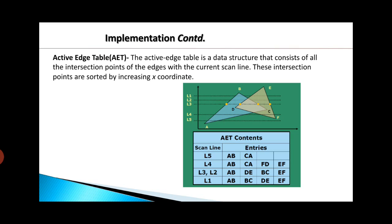Scan line N4 has four intersection points — two from polygon A, B, C and two from polygon D, E, F. N3 and N2 are intersecting at edges AB, DE, BC, and EF. And N1 is intersecting at AB, BC, DE, and EF. This is the Active Edge Table — it stores the intersection points of the scan lines.